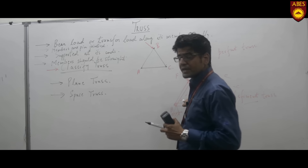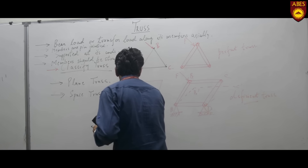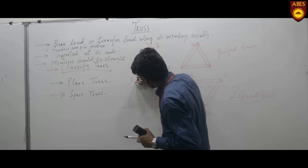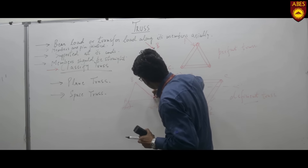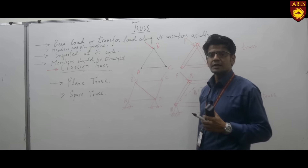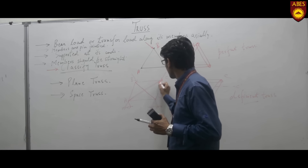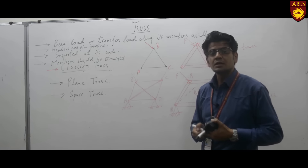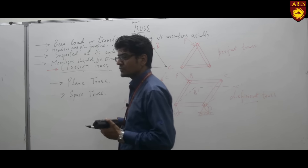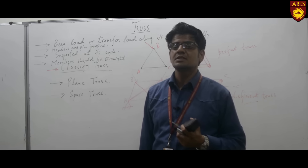In order to make the four-member truss perfect, I just need to attach an additional member BD along its diagonal. Now if a load is applied either at B or at D, the truss will not get deformed and it is considered a perfect truss. If I add another diagonal AC as well, the truss is also not deformed, but it is not called a perfect truss — it is called an over-rigid truss. So trusses are classified as: perfect truss, imperfect or deficient truss, or over-rigid truss.